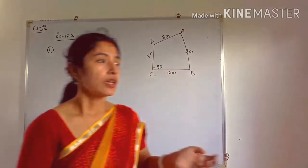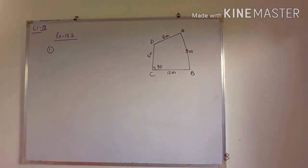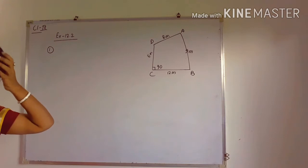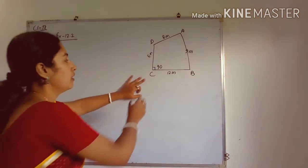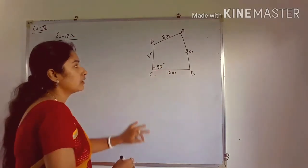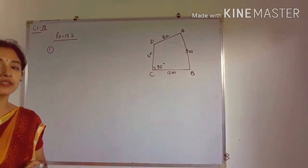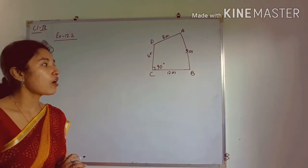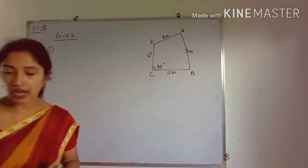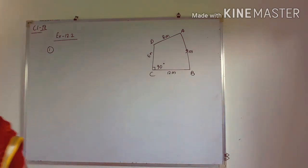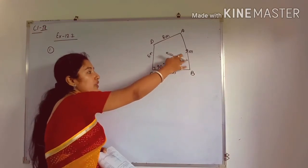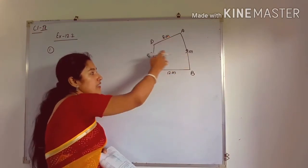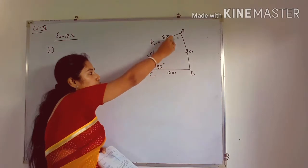In exercise 12.2, question number 1, a quadrilateral ABCD is given in which angle C is 90 degrees and the lengths of the remaining sides are given. We have to find the area this quadrilateral occupies — that means we have to find the enclosed area within its sides.